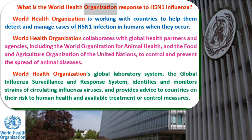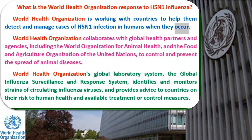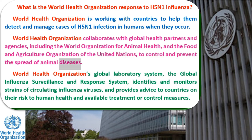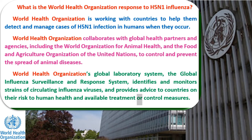The World Health Organization is working with countries to help them detect and manage cases of H5N1 infection in humans when they occur. WHO collaborates with global health partners and agencies, including the World Organization for Animal Health and the Food and Agriculture Organization of the United Nations, to control and prevent the spread of animal diseases. WHO's global laboratory system — the Global Influenza Surveillance and Response System — identifies and monitors strains of circulating influenza viruses and provides advice to countries on their risk to human health and available treatment or control measures.